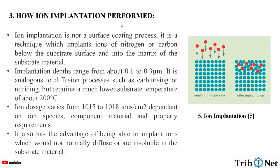How is ion implantation performed? Ion implantation is not a surface coating process. It is a technique which implants ions of nitrogen or carbon below the substrate surface and into the matrix of a substrate material. Implantation depth ranges from about 0.1 to 0.3 micrometer. It is analogous to a diffusion process such as carburizing or nitriding, but requires a much lower substrate temperature of about 200 degrees Celsius.